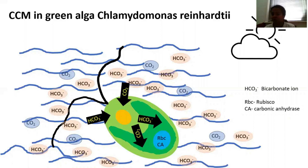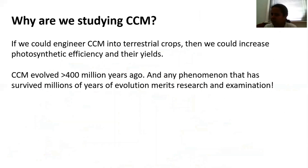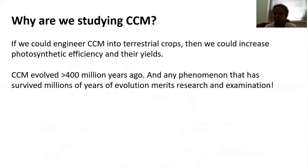Our lab focuses on understanding the various molecular aspects that help establish CCM, and that is what my research revolves around. The question many of you might ask is why study this phenomenon at all? If we could engineer CCM into terrestrial crops, we could increase their photosynthetic efficiency and their yields — one of the long-term goals of studying CCM for several research groups, including ours. One must also bear in mind that this is a phenomenon that emerged more than 400 million years ago on Earth, and any phenomenon that has survived millions of years of evolution merits research and examination.